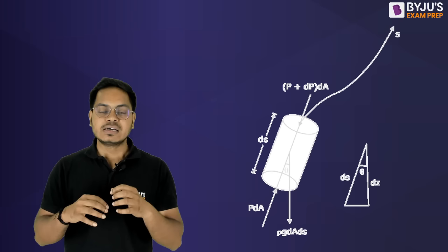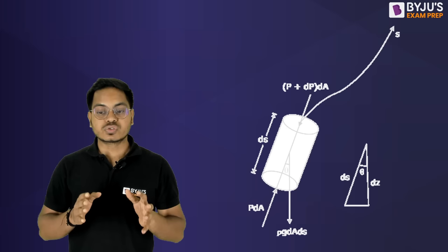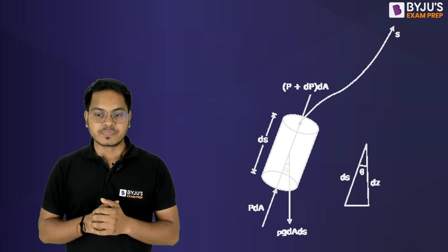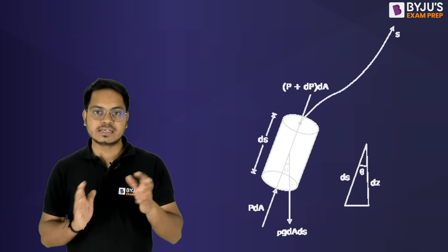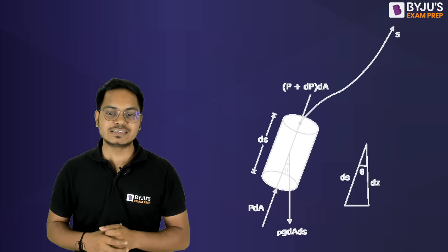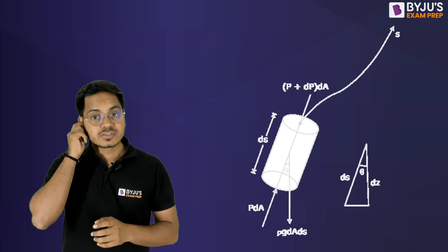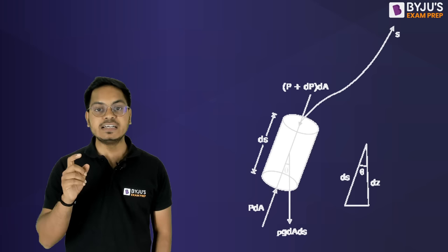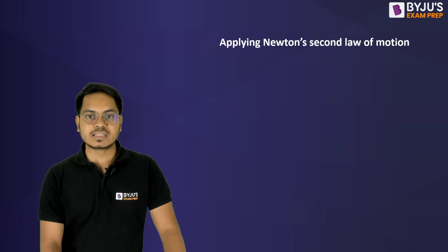The gravity force always acts exactly downward. The weight is m·g, and since density ρ = mass/volume, mass equals density times volume. The volume of the cylinder is ds·dA, so the gravitational force is ρ·g·dA·ds acting downward. Since this force is inclined at angle θ to the streamline direction, we need the component ρ·g·dA·ds·cosθ in the direction of the streamline.